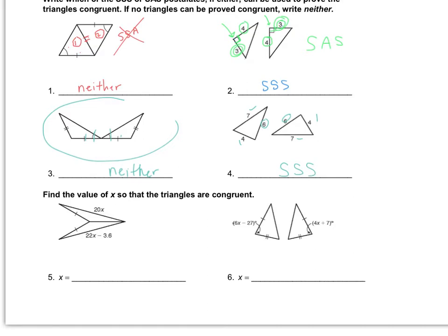Now, find the value of X so the triangles are congruent. I know one side is congruent to itself by reflexive, so I just need the two third sides to be congruent by setting them equal: 20X equals 22X minus 3.6. That gives me 2X equals 3.6, so X equals 1.8.